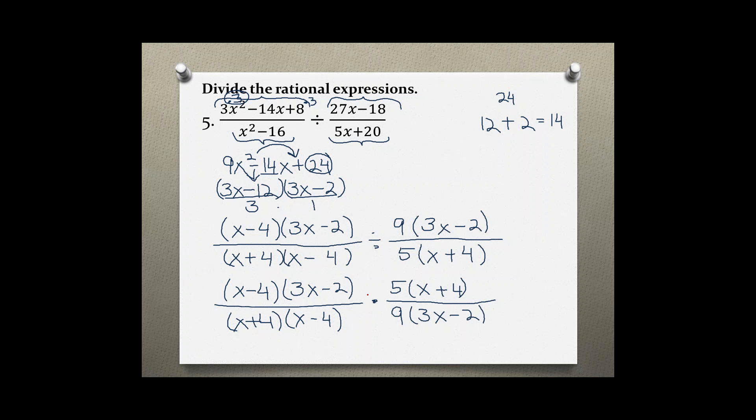We can start cross cancelling. Starting here with (x minus 4) on top and bottom, (3x minus 2) top and bottom, (x plus 4) top and bottom. Five and nine don't share a common factor.